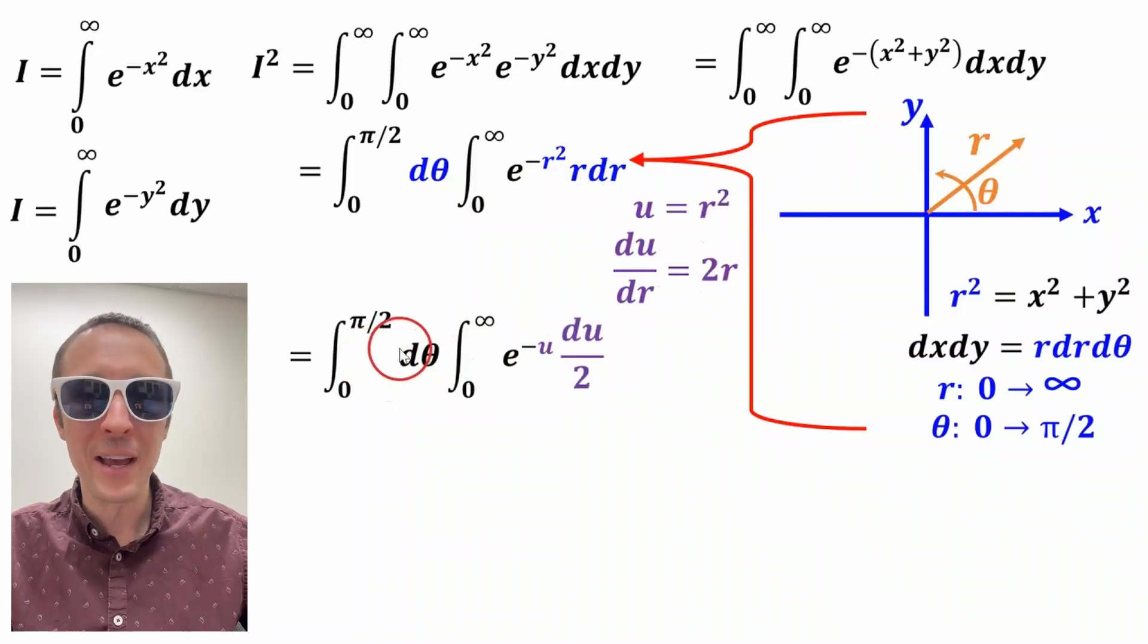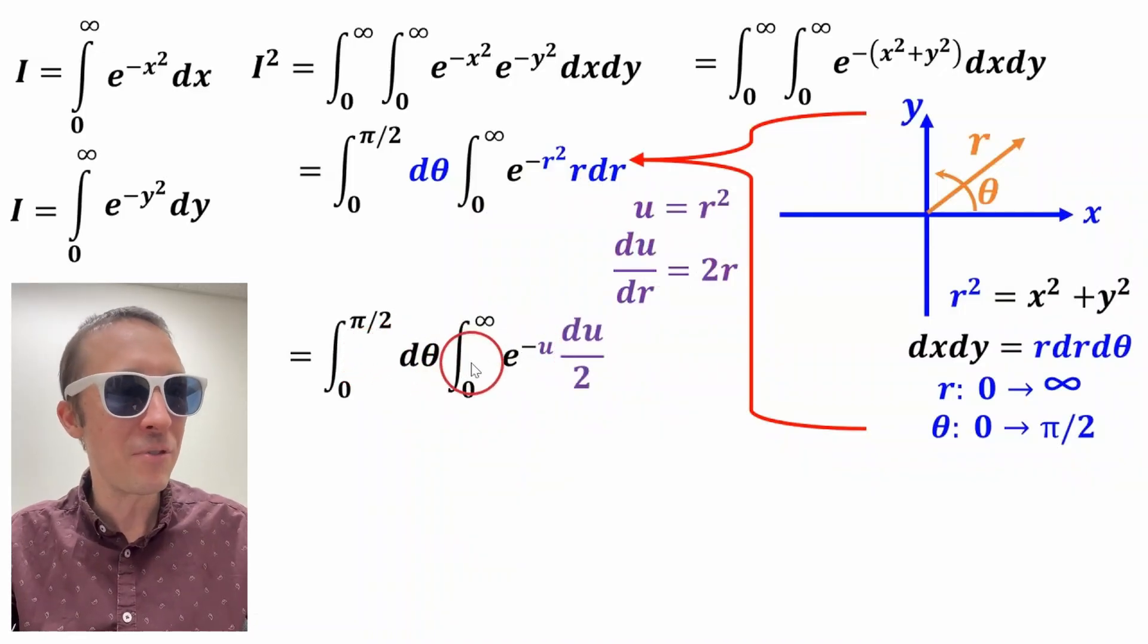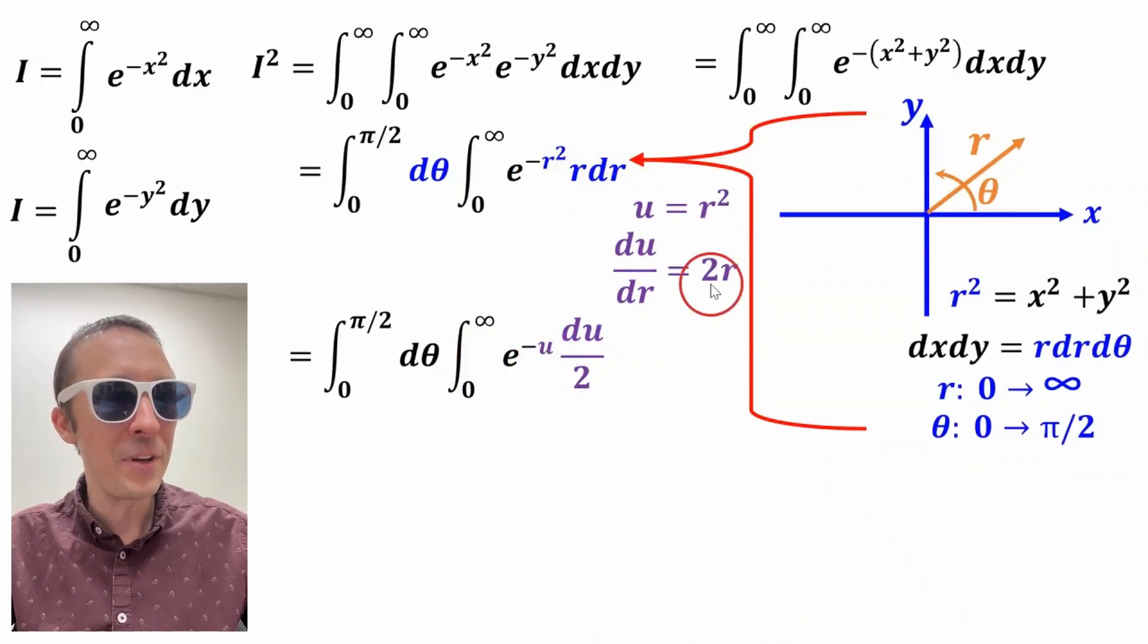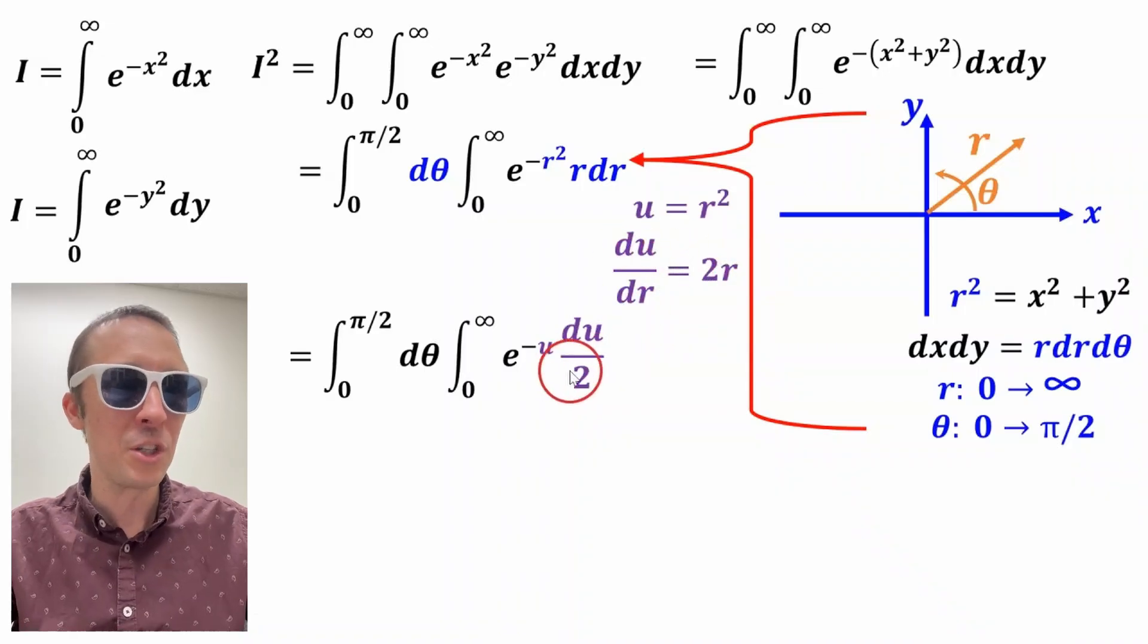And we'll substitute that in to give us this part right here. So this left integral we haven't touched yet. And this right integral, we're integrating e to the negative u because u is r squared. And this r dr, if we rearrange this and solve for r dr, multiply both sides by dr, divide by two, we get r dr equals du over two, which is what we got here.